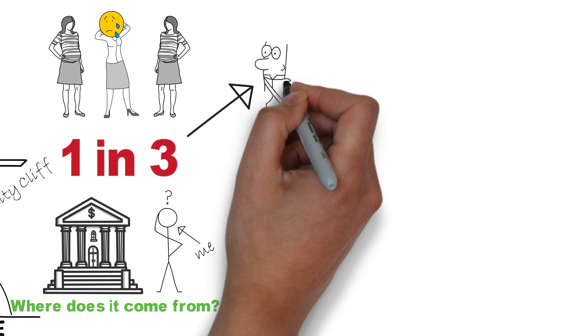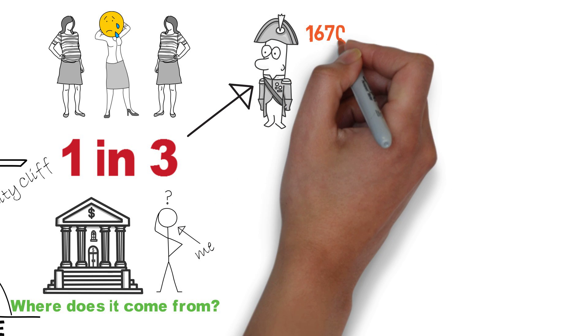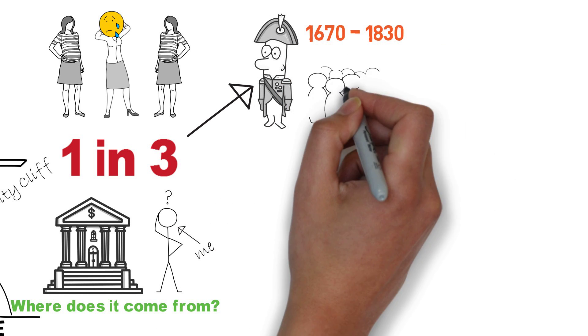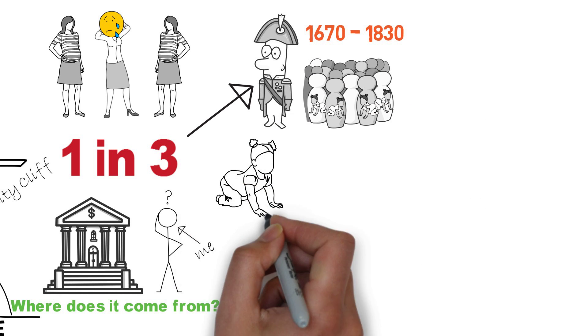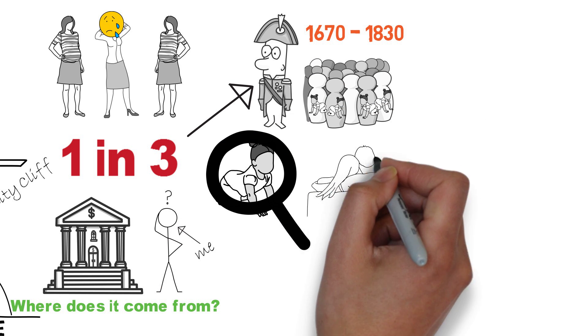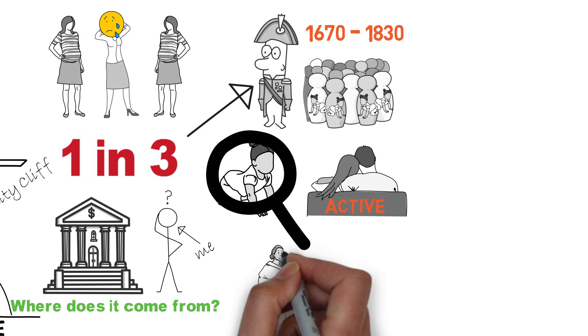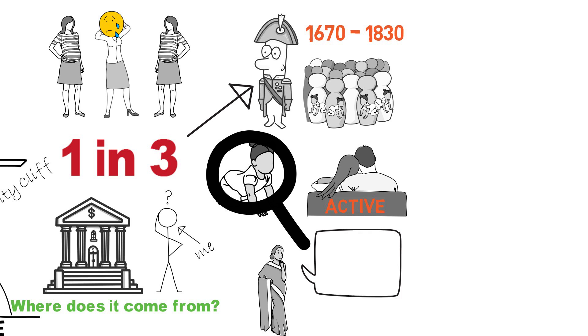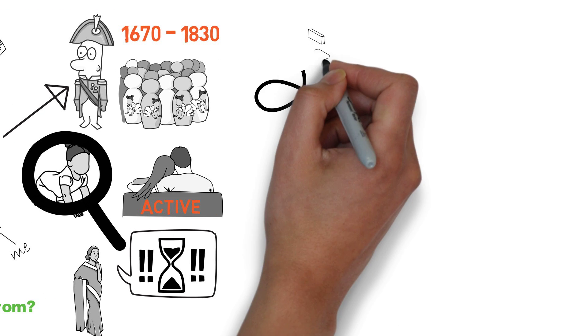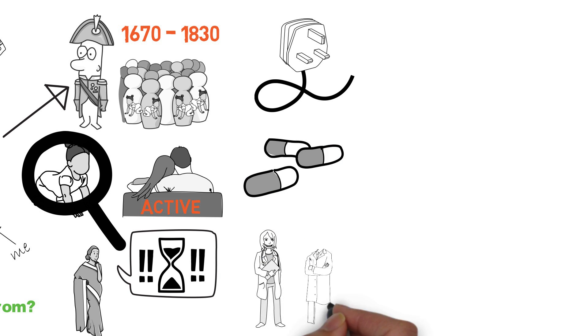This number, 1 in 3, comes from France in the 1700s. It looked at lots of people and saw how many got pregnant, but it didn't consider whether they were trying to get pregnant or even if they were sexually active. And that means that there's millions of people today who are told to get pregnant now based on a statistic, 1 in 3, that comes from a time before electricity, antibiotics or fertility treatment.